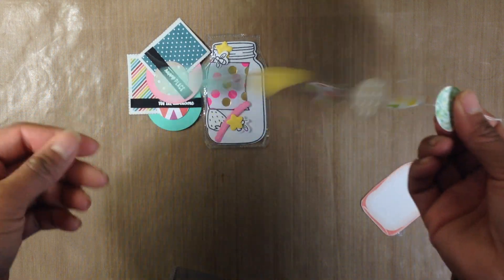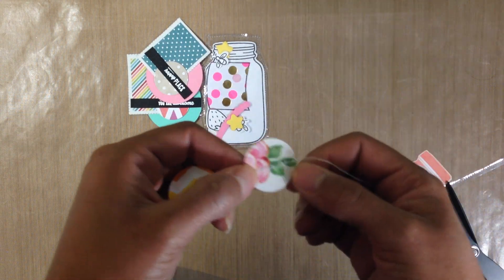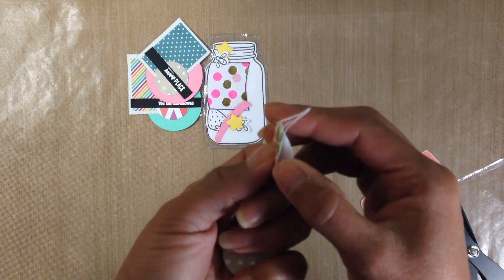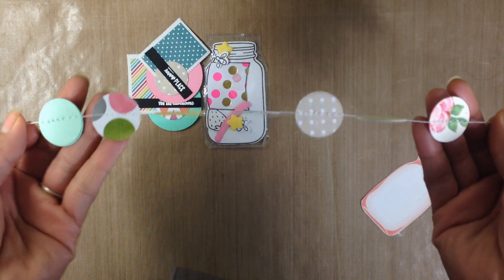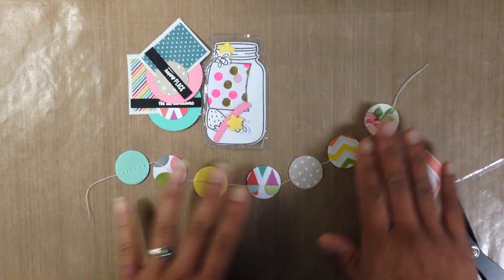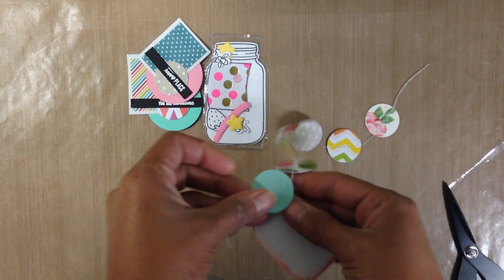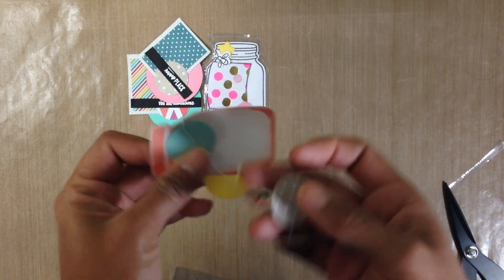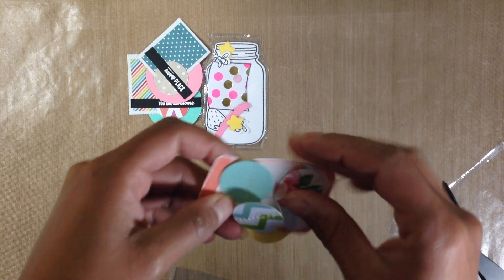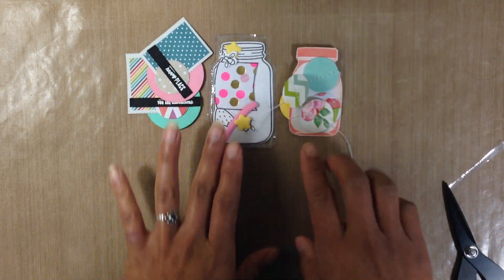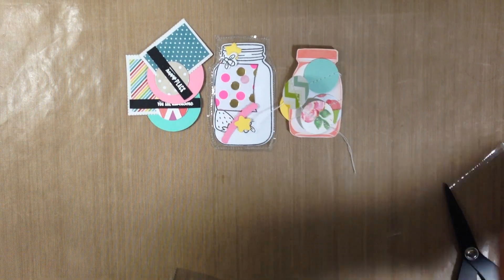So I have a ton of these and so I thought you know what what better way to use them than to stick them on a garland, sew them up and you are done. If you don't have a sewing machine you can just glue them both in between a piece of twine or a piece of string or ribbon and you are done. So I really like this little garland and you can just easily wrap it around something like a little ephemera piece and then give it to your pocket letter pal that way.